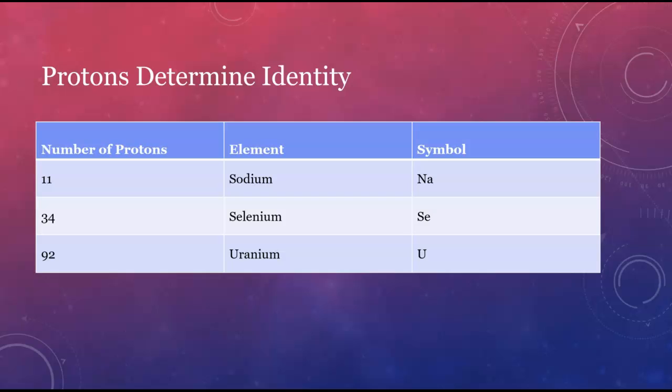The number of protons in an atom is referred to as the atomic number. The atomic number, name, and symbol for an element are all essentially interchangeable ways to specify that element.